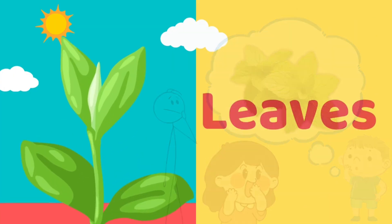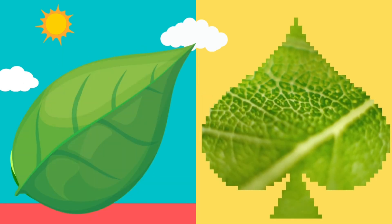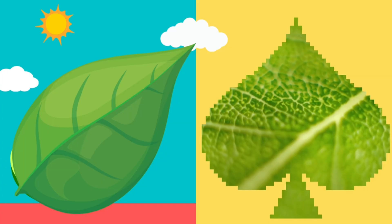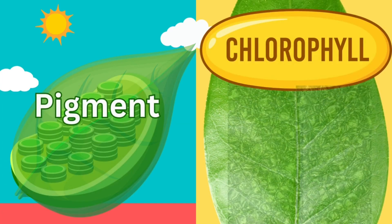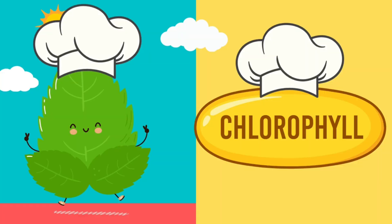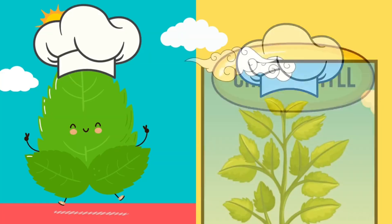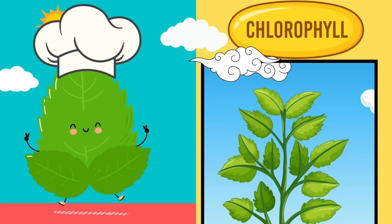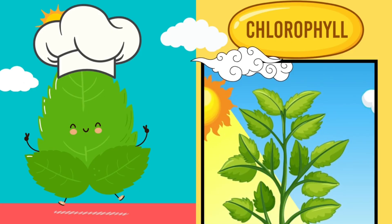Yes, leaves are the kitchen of the plant. Now let's meet the chef. Inside every green leaf there is a green pigment called chlorophyll. Chlorophyll is like the chef in the leaf kitchen. Its special job is to trap sunlight and use it for cooking food.